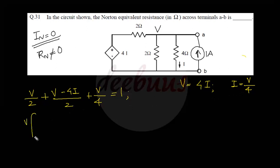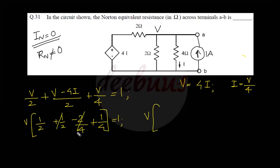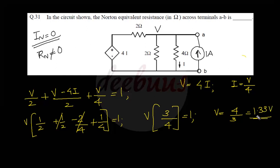Since V equals 4i, we substitute i equals V/4. Taking V common: V times (1/2 plus 1/2 minus 4/2·(1/4) plus 1/4) equals 1. Simplifying: V times (1/2 plus 1/4) equals 1, so V times (3/4) equals 1, giving V equals 4/3 equals 1.33 volts.